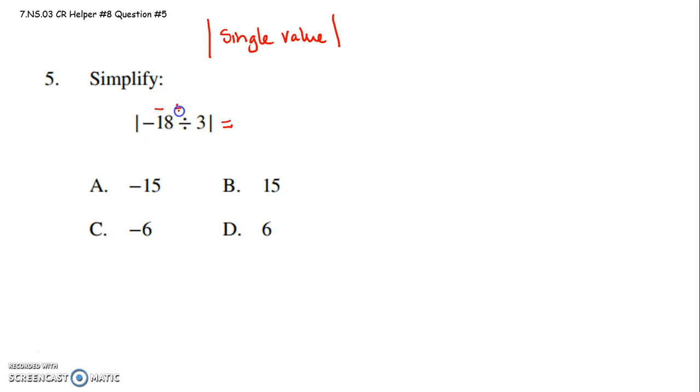Well, a negative divided by a positive is a negative. So inside my absolute value, I have a negative. 18 divided by 3 is 6.